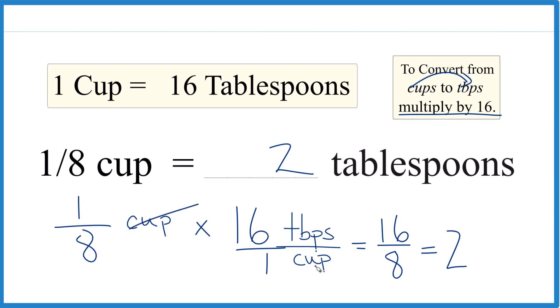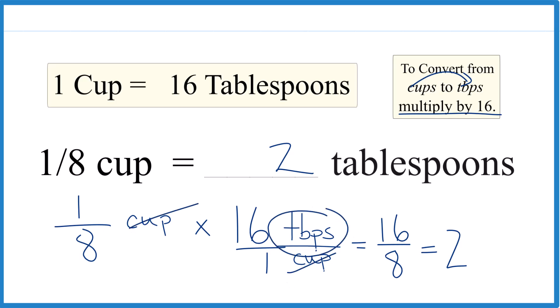If you look at the units, cups cross out. We're left with tablespoons, which is what we're looking for. So that's how you figure out how many tablespoons are in one-eighth of a cup. There are two of them.